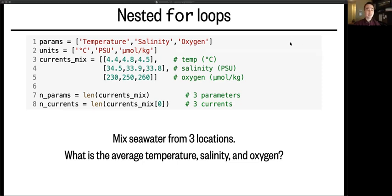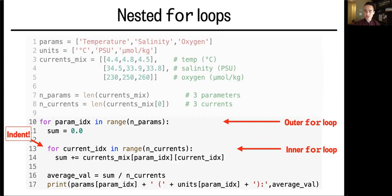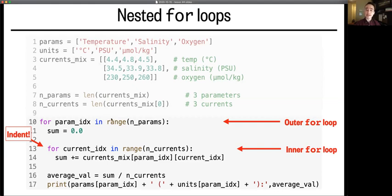Okay, so let's focus on the two for loops at the bottom here. What we've created is what's known as an outer for loop, and that's over here. It's going to iterate over the three parameters, starting with temperature, and each time it will set the variable param_idx to a value from range(n_params), which if you remember is the list 0, 1, 2, because n_params is 3.